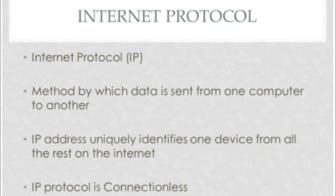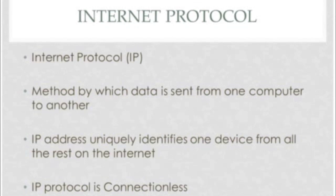In order to understand the network layer, you need to understand what IP is and how it works. In a nutshell, IP is the method by which data is sent from one computer to another on the internet. Each computer, known as a host, has at least one IP address that uniquely identifies it. When you send or receive data — for example, by sending an email or requesting a webpage — the message gets divided into little chunks called packets. Each of these packets contains both the sender's internet address and the receiver's address. Any packet is sent first to a gateway computer that understands a small part of the internet, which reads the destination address and forwards the packet to an adjacent gateway, and so forth across the internet until one gateway recognizes the packet as belonging to a computer in its immediate domain. The gateway then forwards the packet directly to the computer whose address is specified.